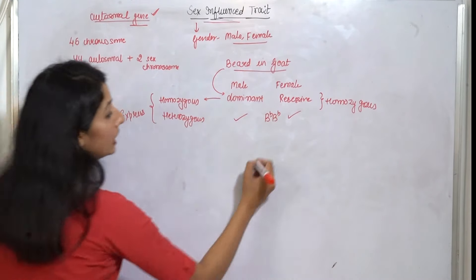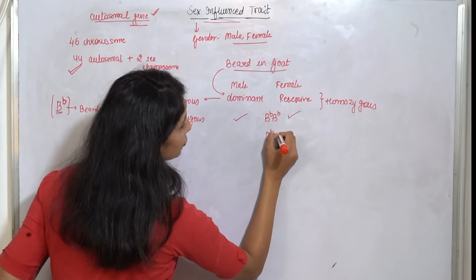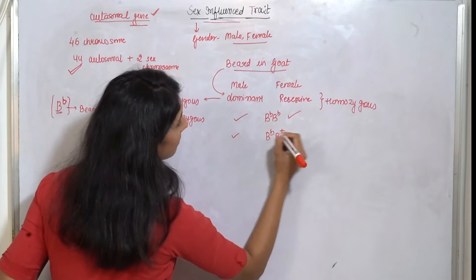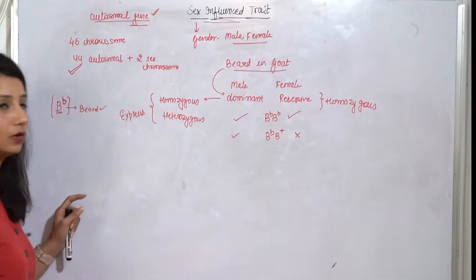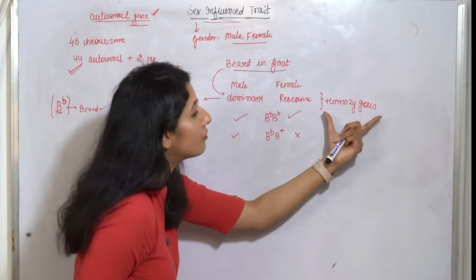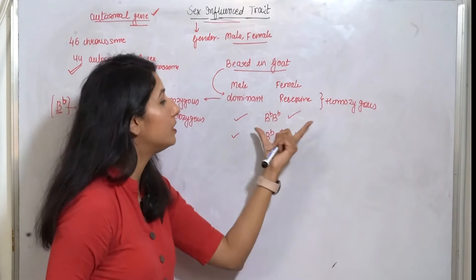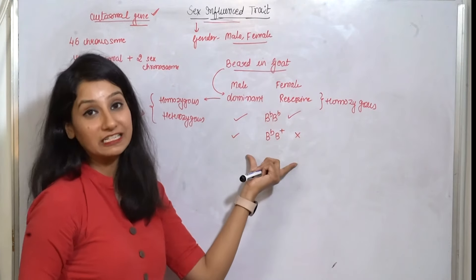But if we see here in homozygous condition, then both have a beard. But if it comes in heterozygous condition, then it will not have a beard. The reason is that only in homozygous condition it will show the beard in this condition because it will be recessive.